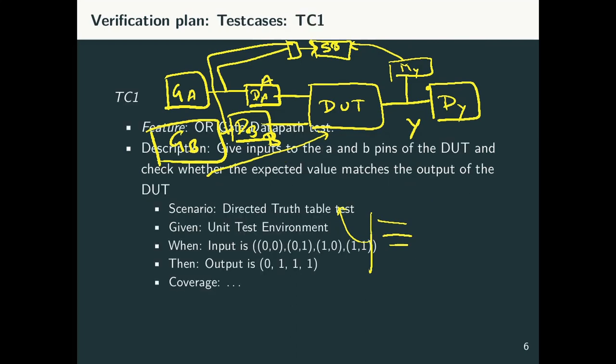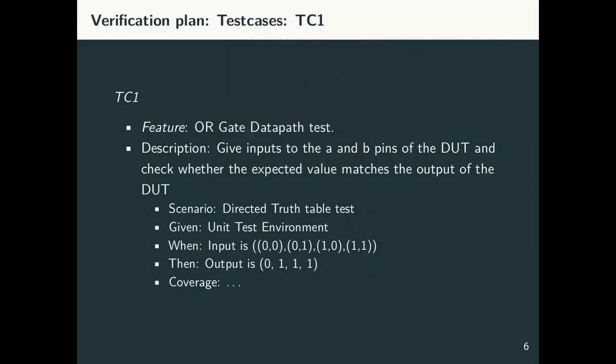Once this is in place, the next thing is to start defining the test cases that I will run on this particular environment. I will start defining my test cases. I have here test case one. My feature is that this is an OR gate datapath test. Then a description. The description says that give inputs to A and B pin. And check whether expected value matches the output of DUT. This is a directed truth table based test case. We are given the unit test environment. What we are going to do is we are going to iterate over this set of inputs. This is my input value. And this is my expected output.